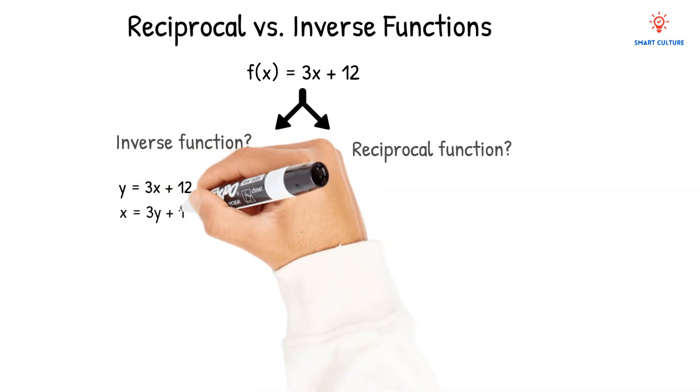The next thing that we should do is swap x and y. So now we have x is equal to 3y plus 12.